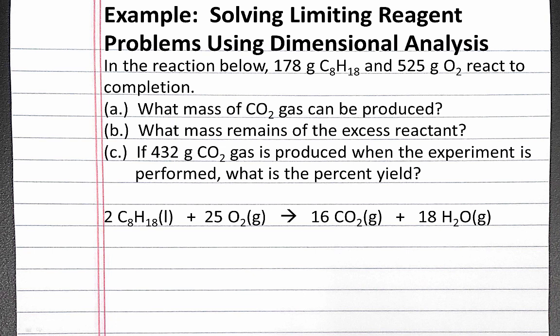In this example problem, we'll solve a limiting reagent problem using dimensional analysis. Our problem reads: in the reaction below, 178 grams C8H18 and 525 grams O2 react to completion. What mass of CO2 gas can be produced? What mass remains of the excess reactant? And if 432 grams CO2 gas is produced when the experiment is performed, what is the percent yield?